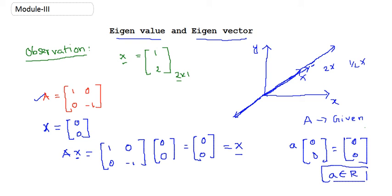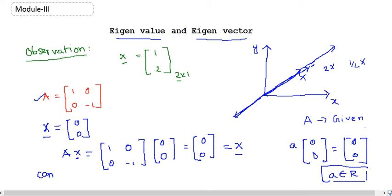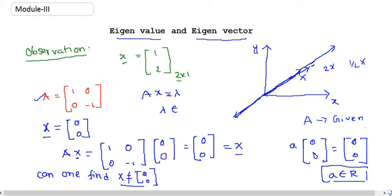The refined question is: can one find a non-zero vector x (x ≠ zero vector) such that A·x = λ·x for some real scalar λ? This means if I multiply A with x, I get a scalar multiple of the same vector x — in the same direction but possibly different magnitude. That is the main question.